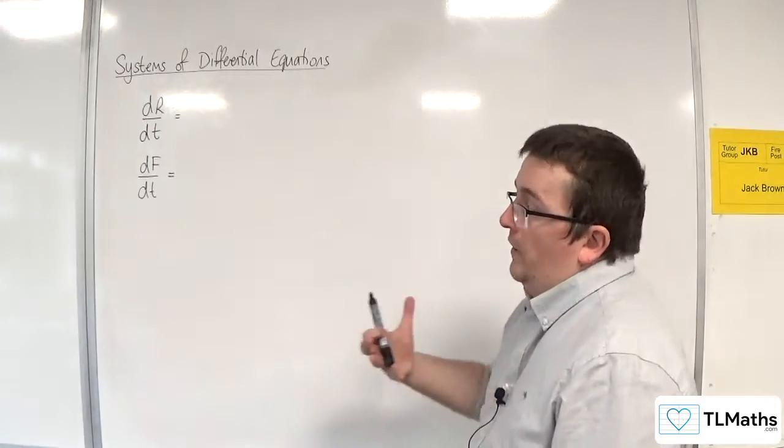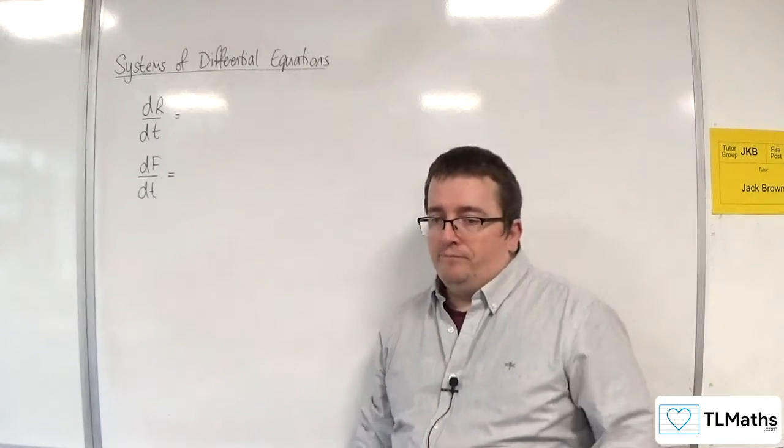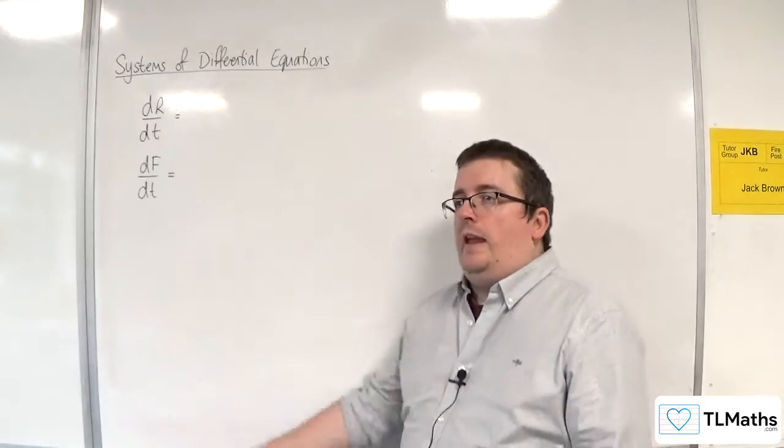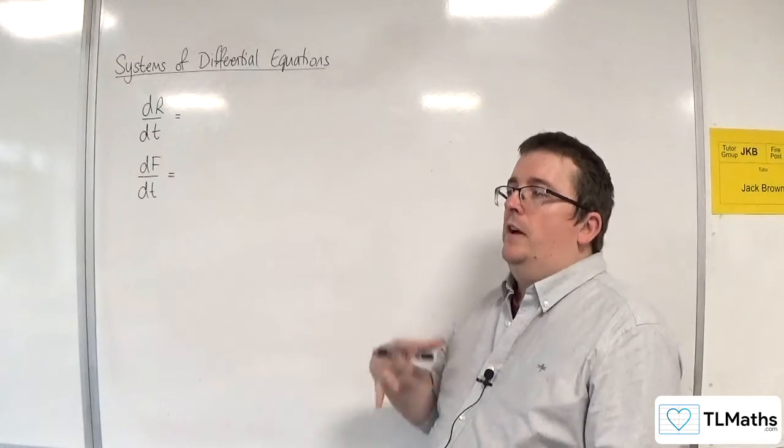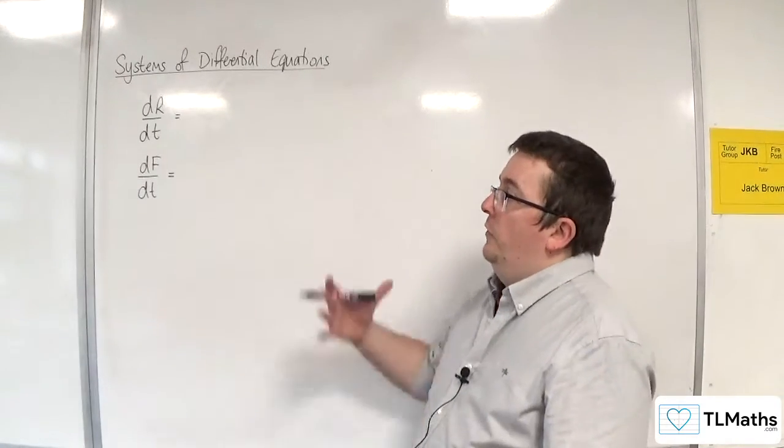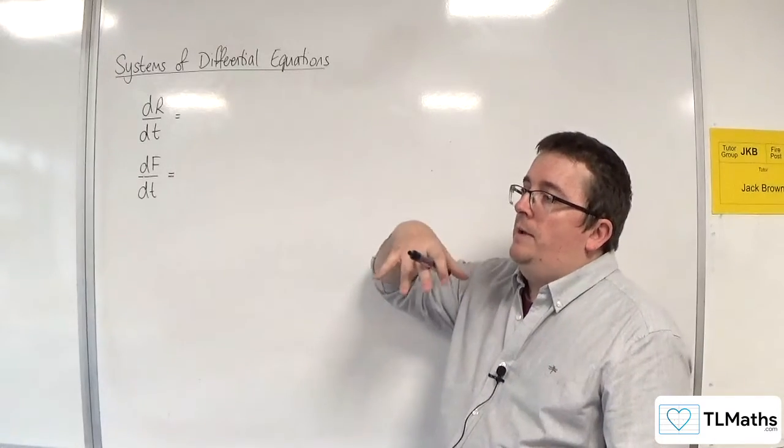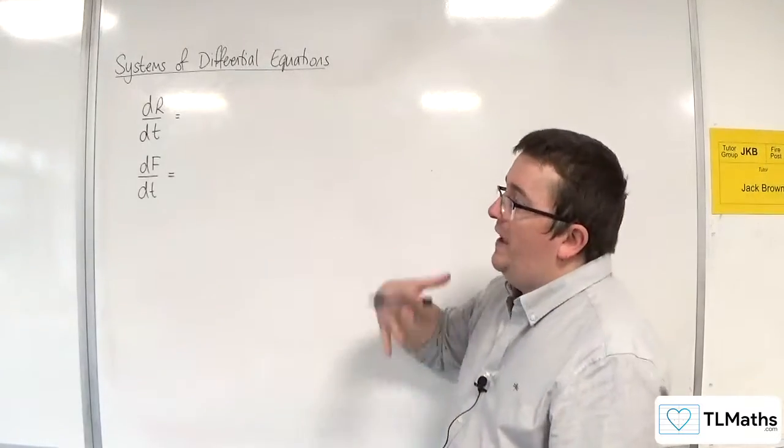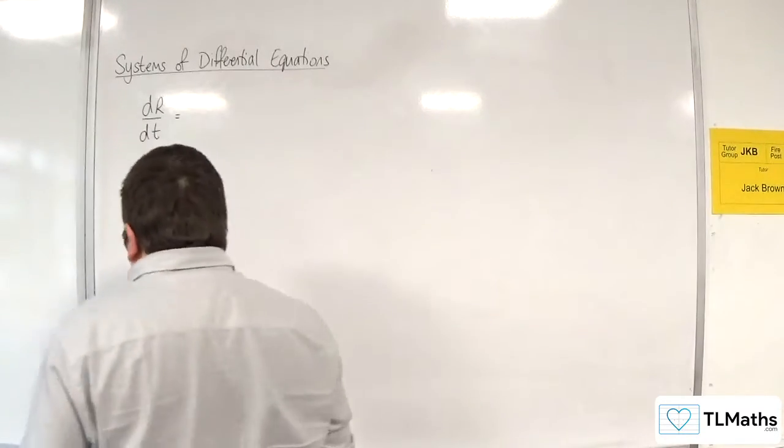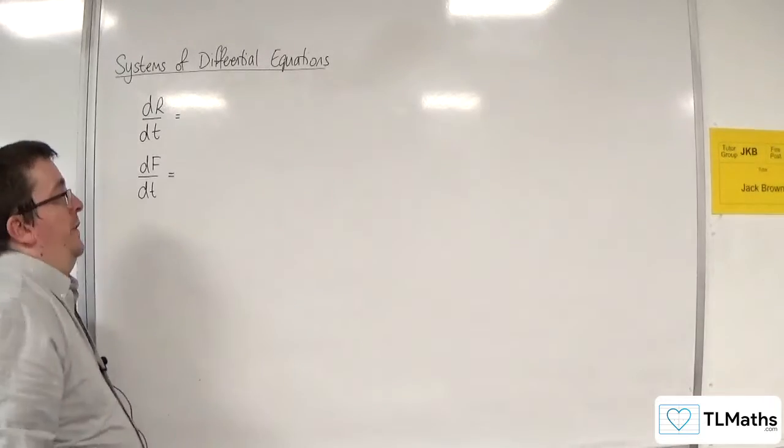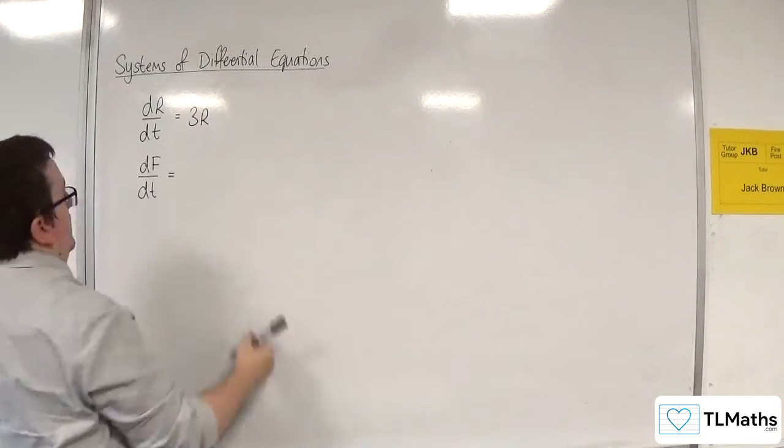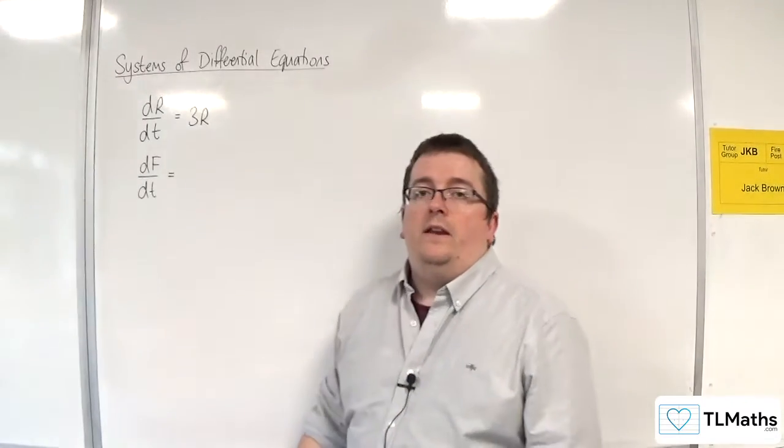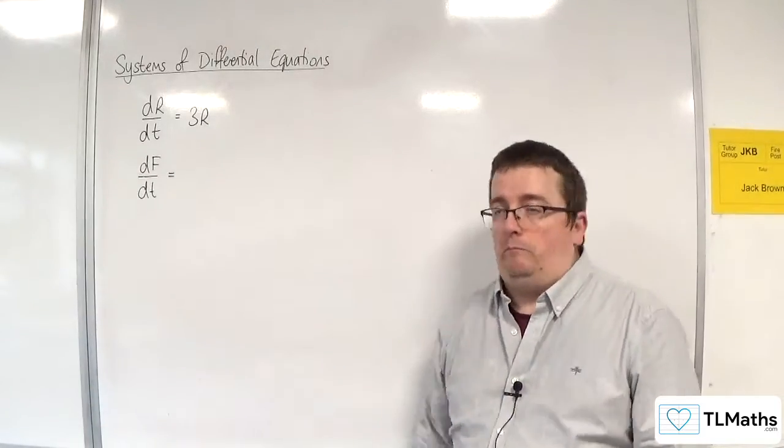So the way that this is set up is it starts off by saying the dR/dt is going to be equal to... Well, the rabbits are going to be mating with one another and their number is going to be increasing. So this is assuming that they've got enough food to do this. So let's say we're going to have 3R. So at the moment, if dR/dt is 3R, then the number of rabbits is just going to increase indefinitely.